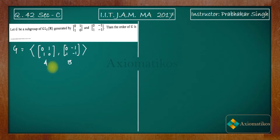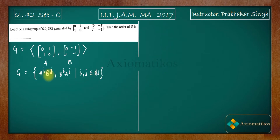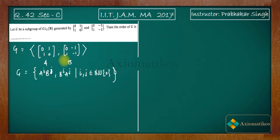So what is the meaning of 'generated'? It actually means that you are taking powers of matrices A and B, like A^i * B^j or B^i * A^j, where i and j belong to the natural numbers union with 0. This is the definition of a generated element.